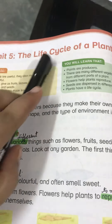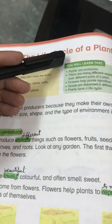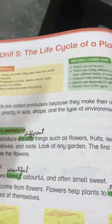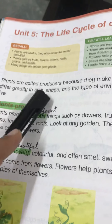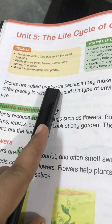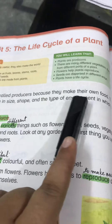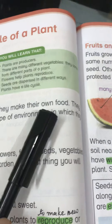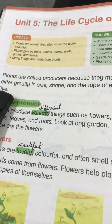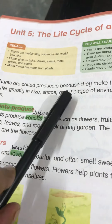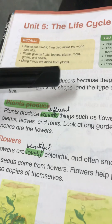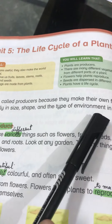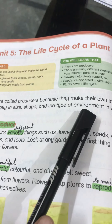Life cycle of a plant — یعنی ایک plant جو ہے وہ کیسے اپنا life cycle complete کرتا ہے۔ Do you know what a plant is? The plants around us — درخت ہیں، پودے ہیں، پھول ہیں — they are all plants. Plants are called producers because they make their own food. They differ greatly in size, shape, and type of environment in which they live. Every plant is different — size میں بھی، shape بھی change ہوتی ہے، اور جس ماحول میں رہتے ہیں اس کے مطابق types بھی change ہوتے ہیں۔